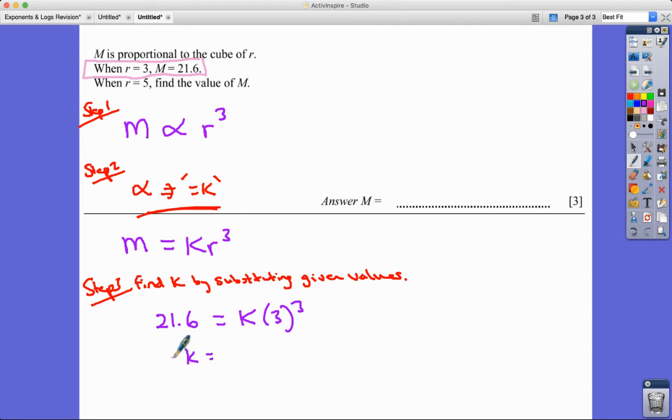So K is going to be equal to 21.6 over three cubed, which I know is 27. Let's reach for my calculator. And 21.6 divided by 27 is 0.8. So I get 0.8.